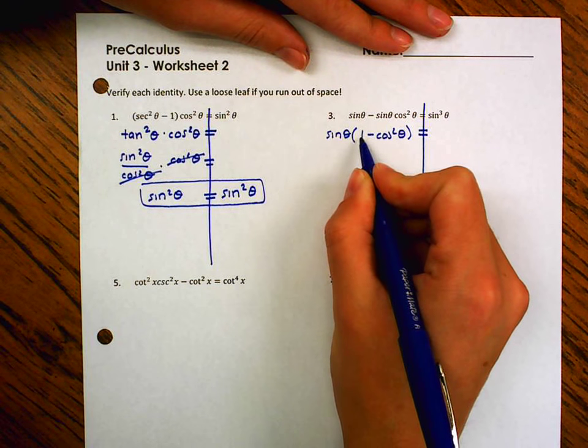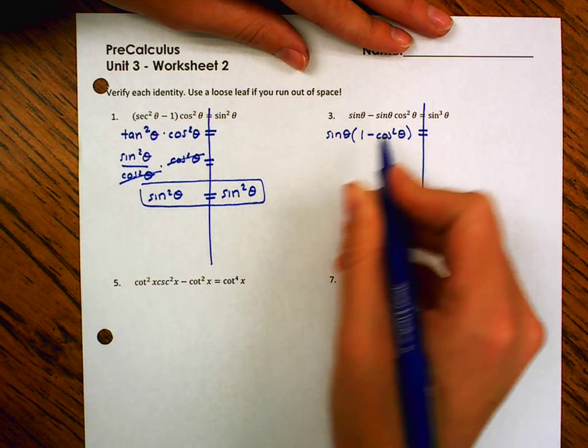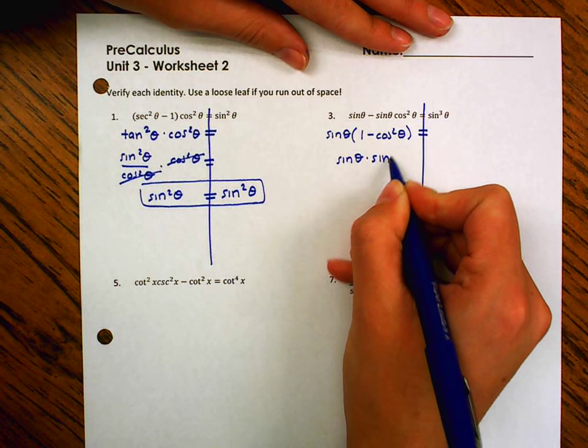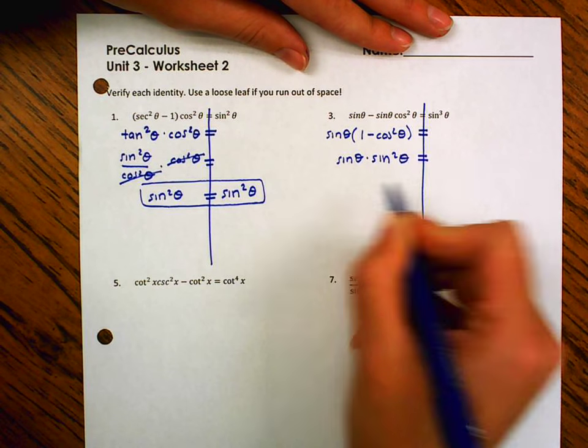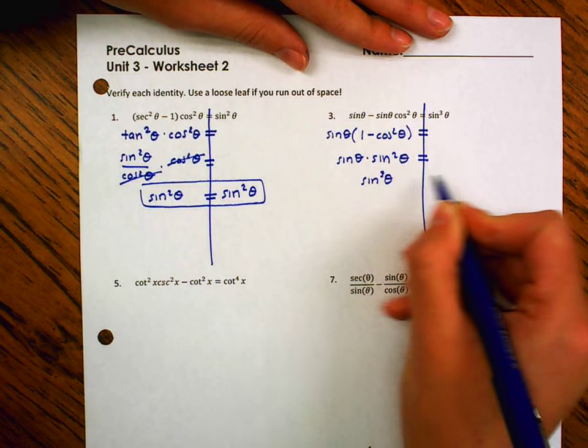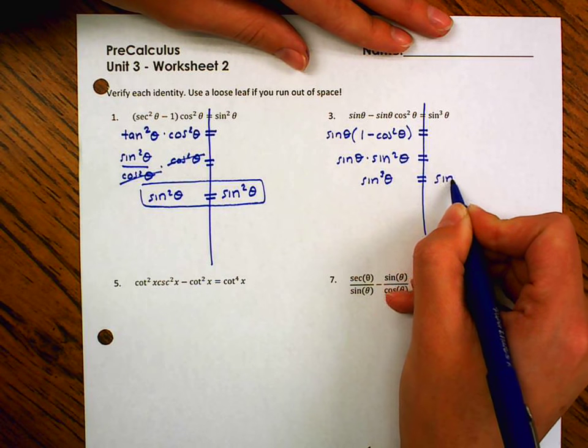Well, now I notice that one minus cosine squared, that's one of my identities. That's sine squared. Well, sine times sine times sine is sine cubed. And that's equal to this side.